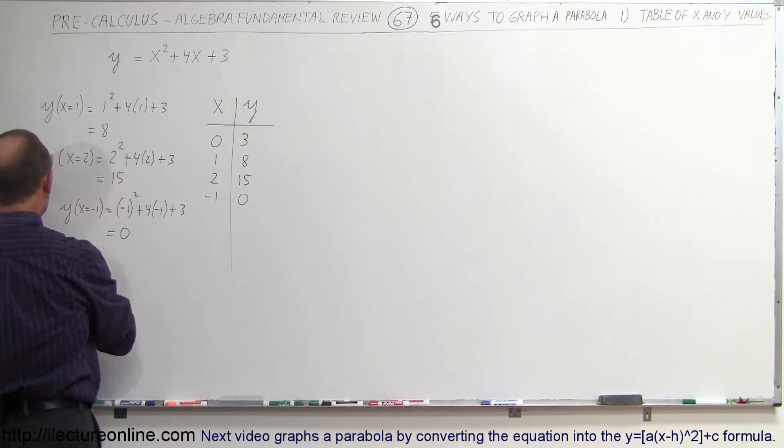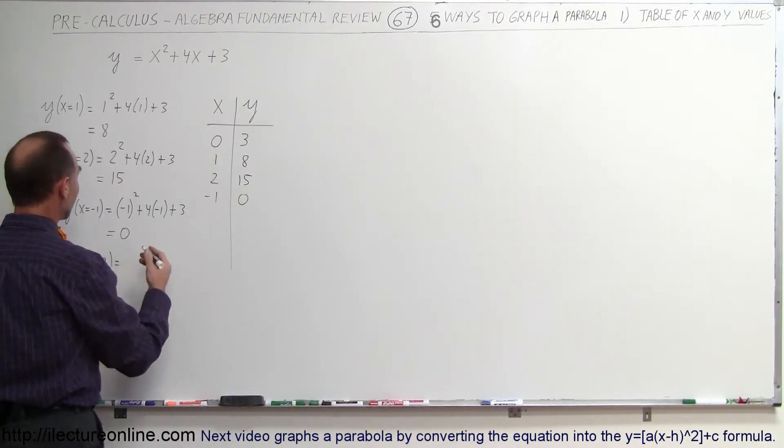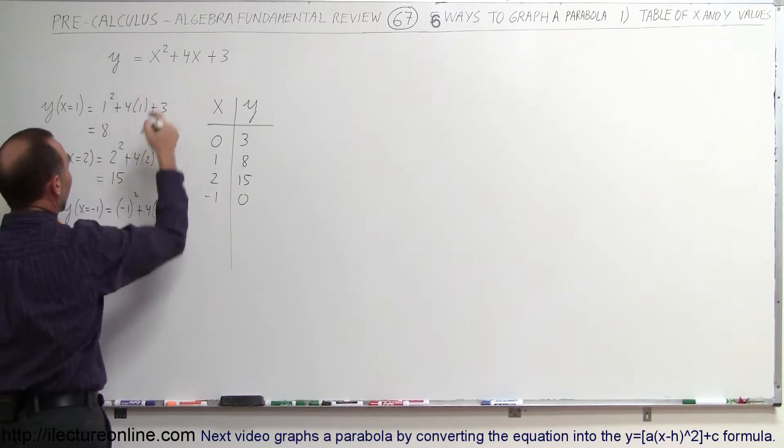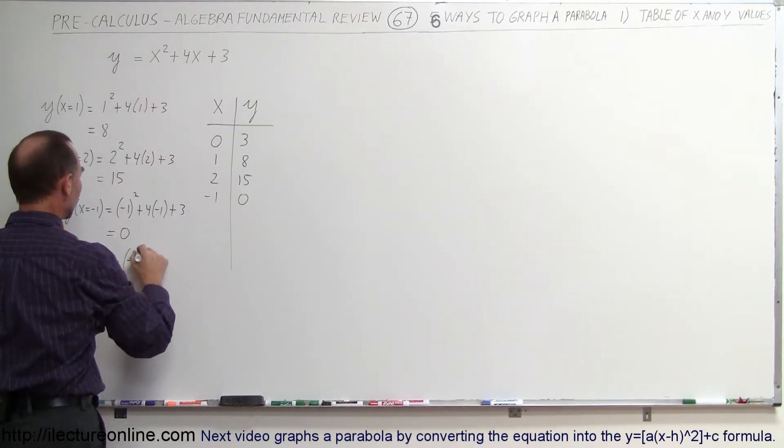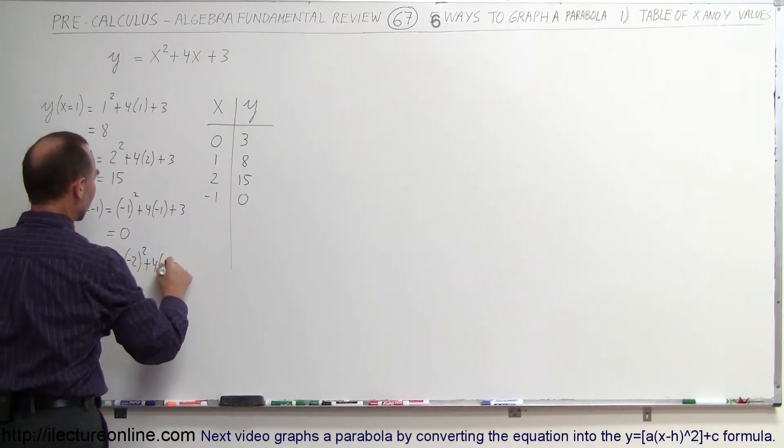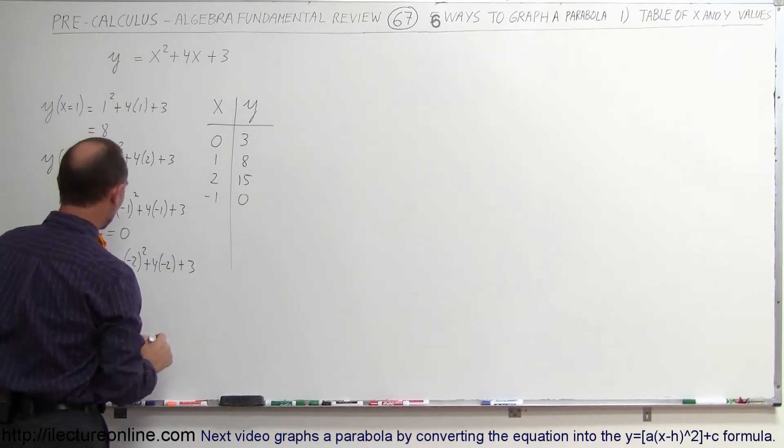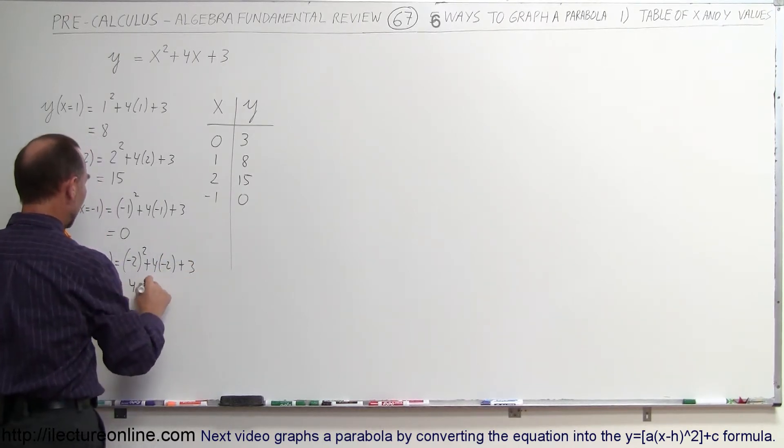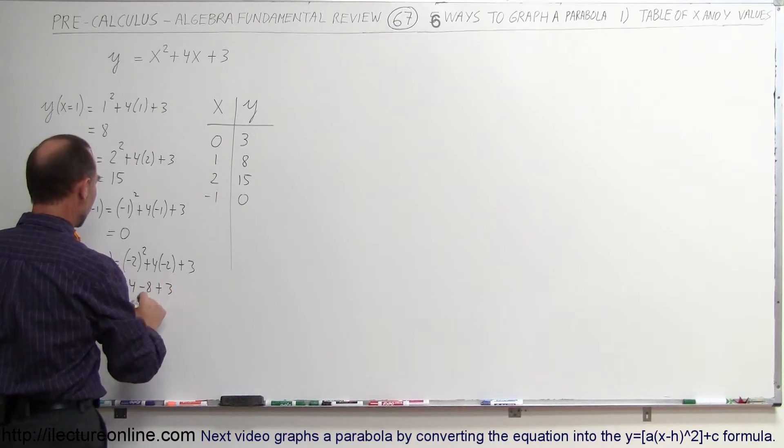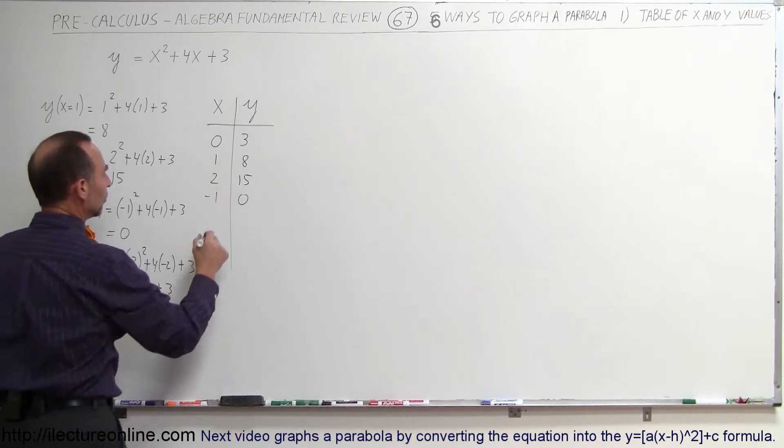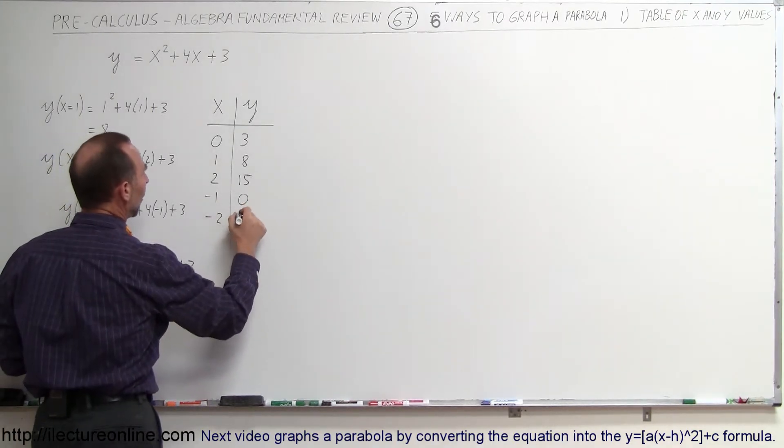All right, let's try another value. y, when x equals negative 2 is equal to, again, we plug in negative 2 for every value for x. So negative 2 squared plus 4 times negative 2 plus 3. So this is equal to 4 minus 8 plus 3. That would be equal to minus 1. So when x equals negative 2, y is negative 1.